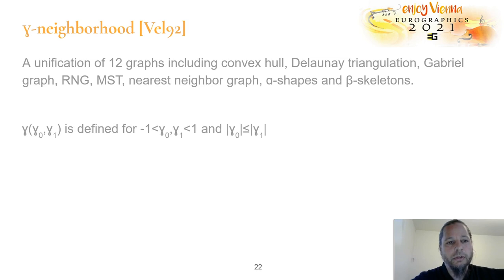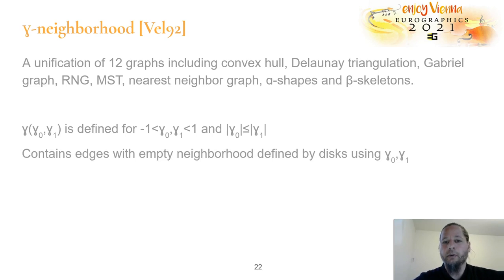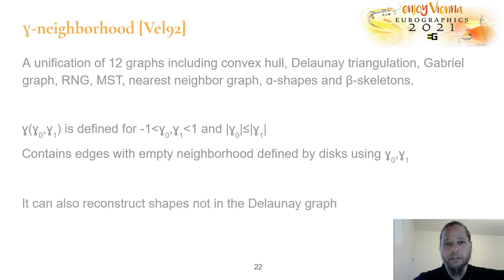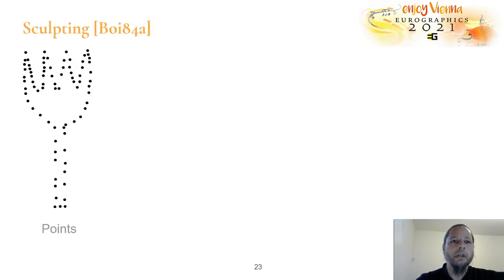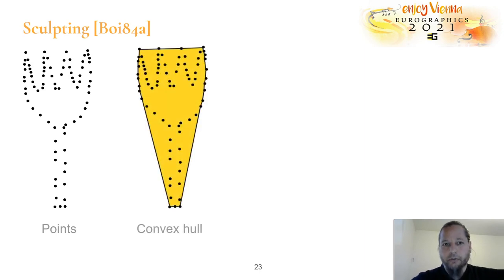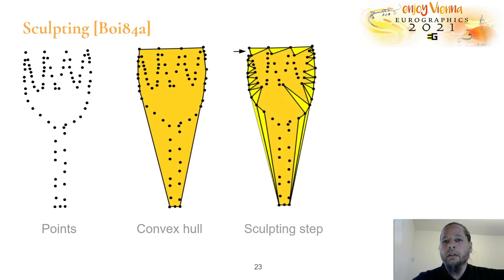Wellcome defines two parameters, gamma zero and gamma one, with some relation limits. This graph contains edges with an empty neighborhood defined by correlations of disks using these parameters. It can also reconstruct shapes which are not under the Delaunay graph. Next is sculpting, defined by Borsonard in 1984. Here we have a challenging point set. It takes the convex hull and then triangles in the Delaunay triangulation of the point set which have an edge in the convex hull, colored light yellow. The triangle which has the largest edge overall — where the largest edge of the triangle is smallest — will be removed first.